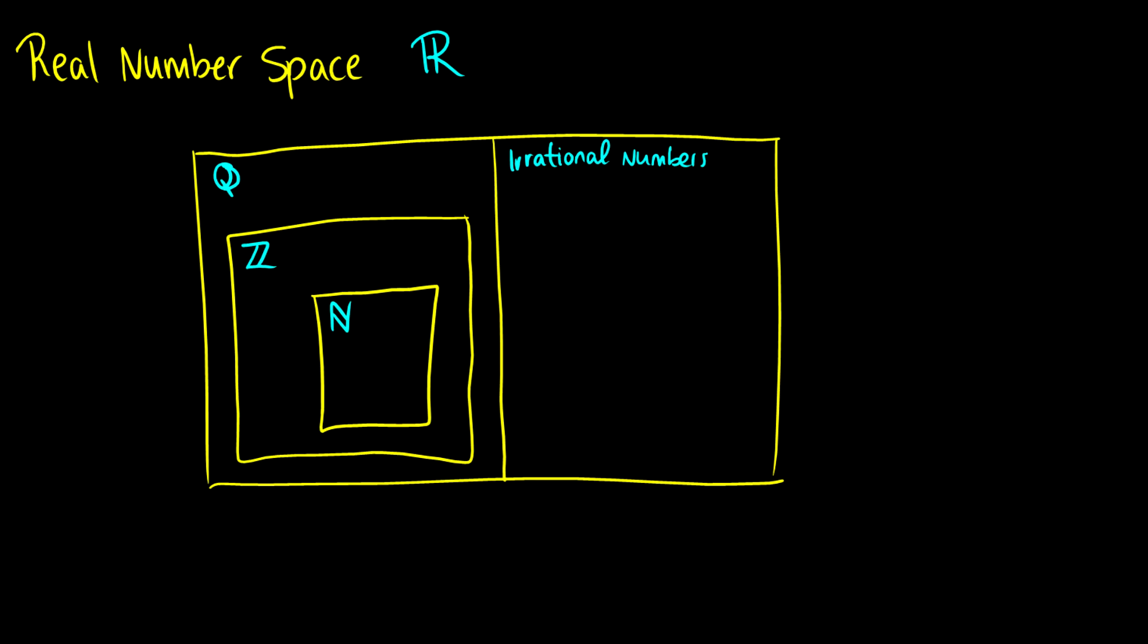So why is this important to know? Well, let's take a look at the size of these things. Is the size of the natural numbers the same as the size of the integers? Is the integers the size of the rational numbers? Are there any natural numbers that are irrational numbers? These are questions that this diagram sort of answers for us, at least visually.